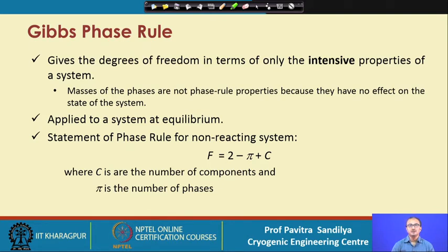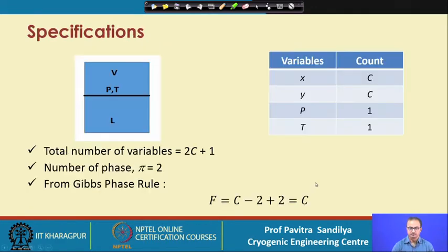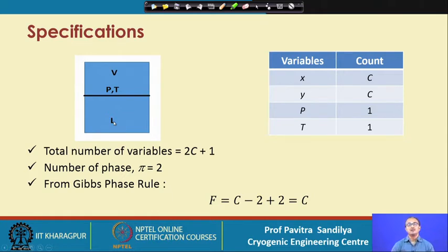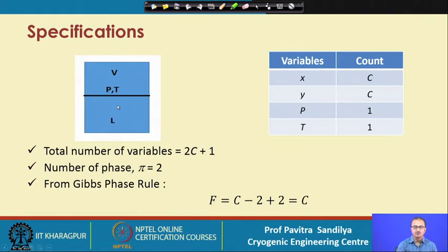This equation can be derived from basic considerations of degrees of freedom calculation; the derivation can be found in any standard thermodynamics textbook. Let us apply the degrees of freedom to a vapor-liquid system, as shown in this figure. The figure shows a closed system — one in which no mass transfer is possible between the system and the surroundings, but energy exchange is permissible. In this closed system we have a vapor phase and a liquid phase which are in equilibrium, and the whole system is characterized by a single pressure and temperature.